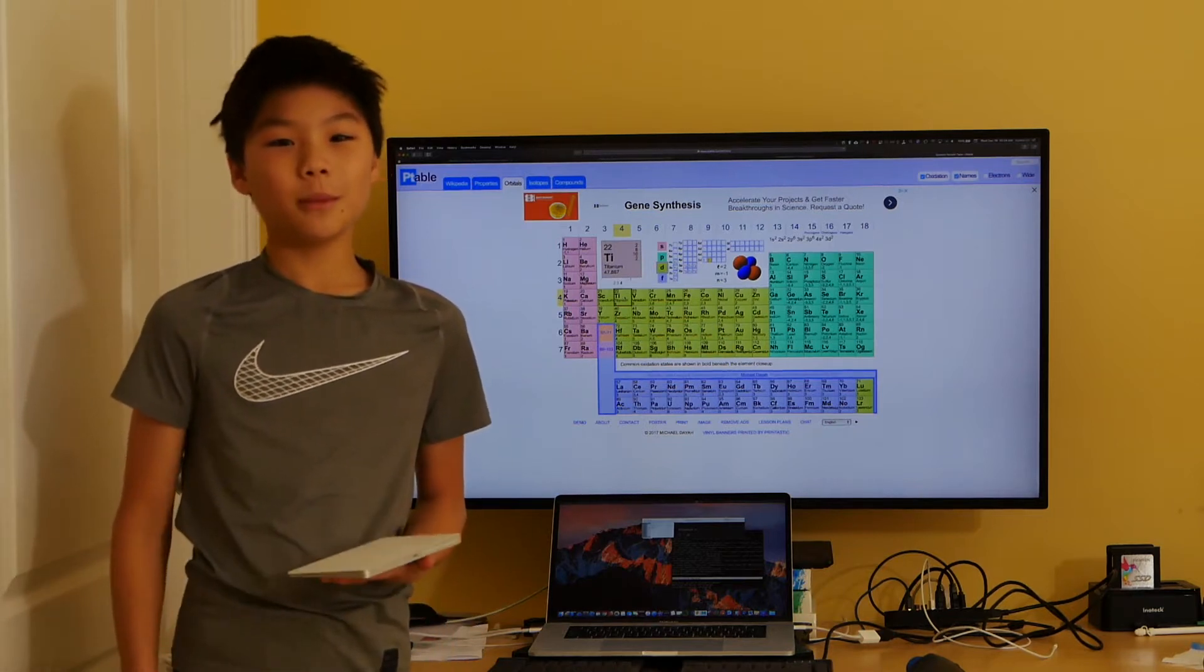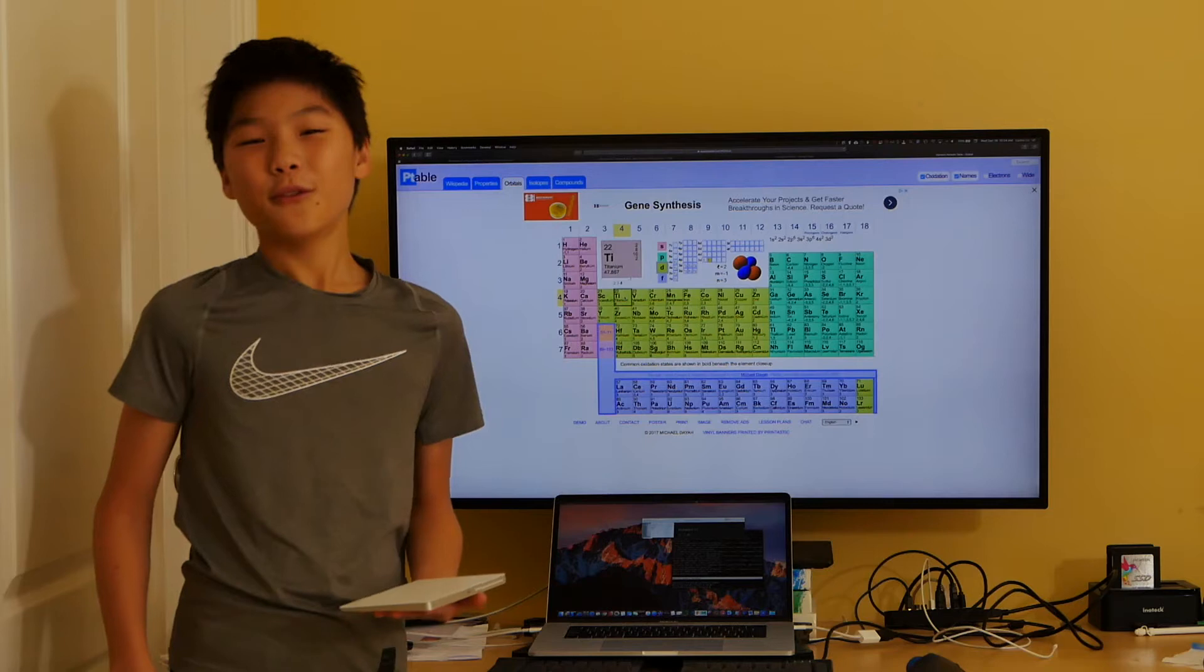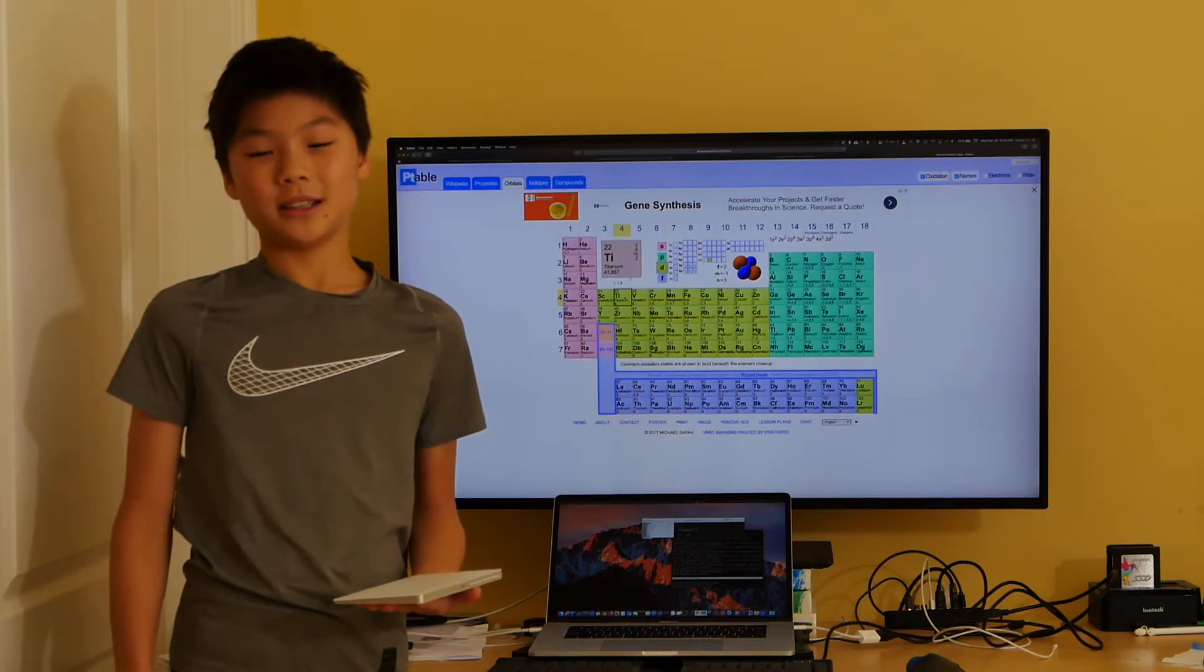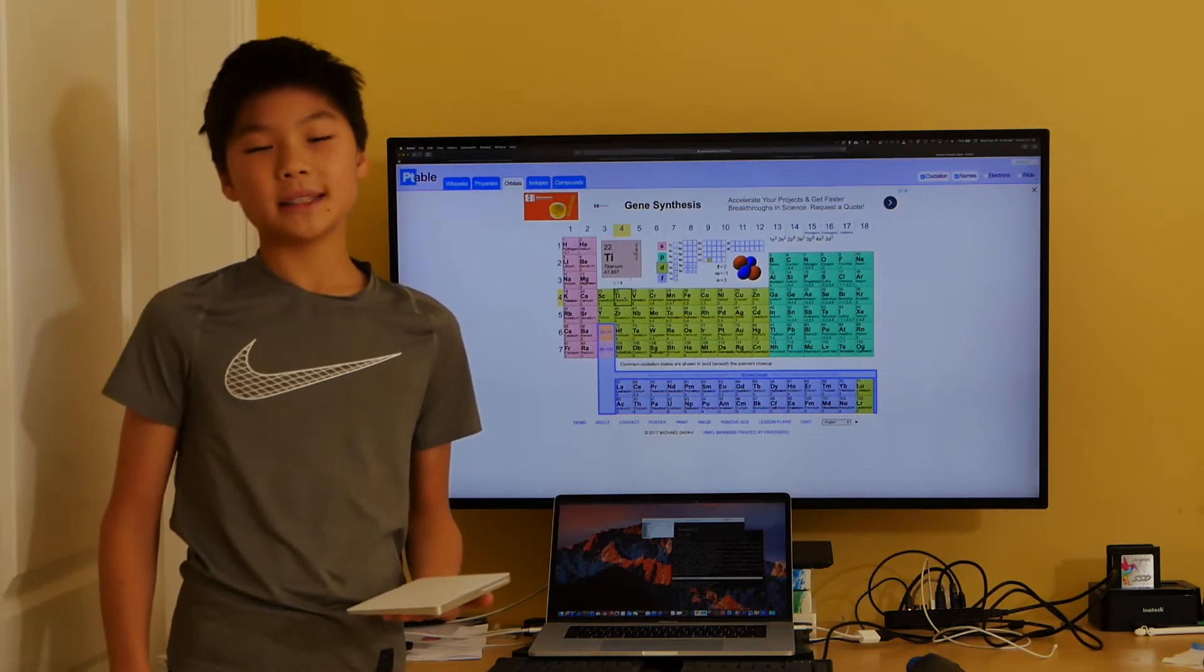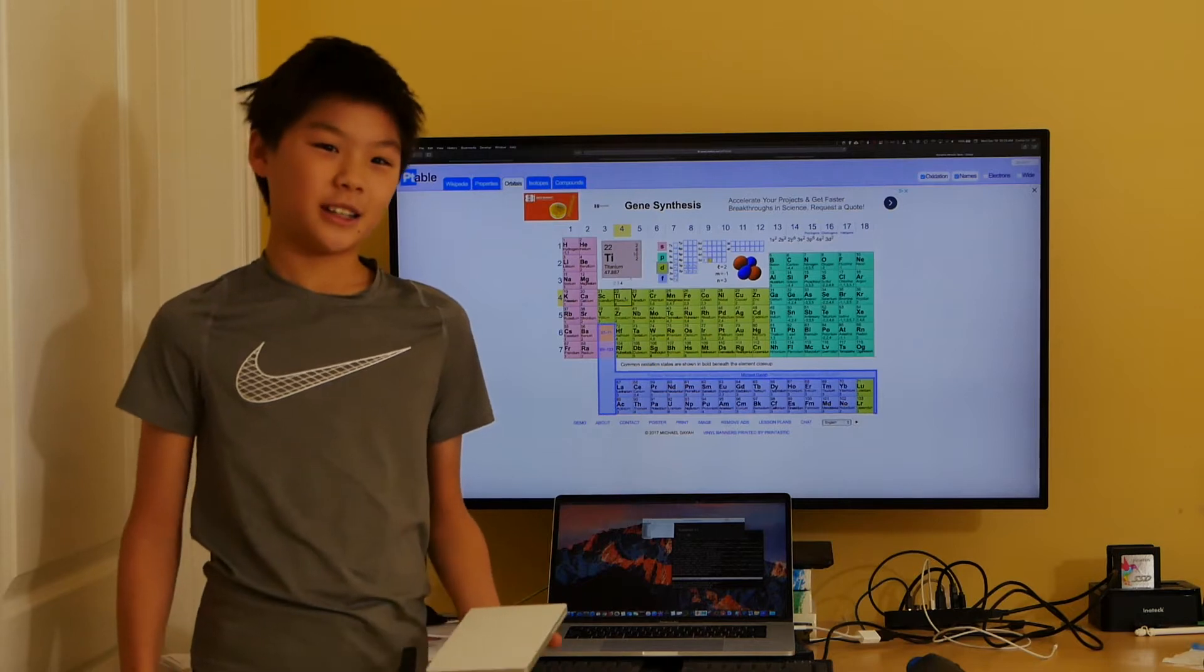Titanium has an atomic mass of 48. 48 minus 22 is 26. Therefore, there are 26 neutrons in a typical atom of titanium.